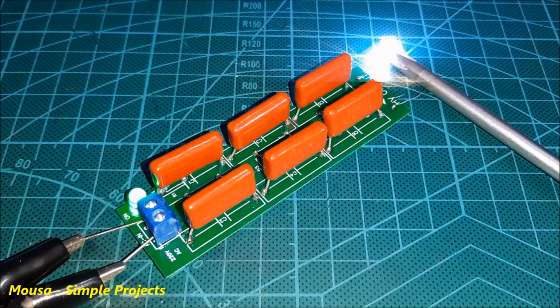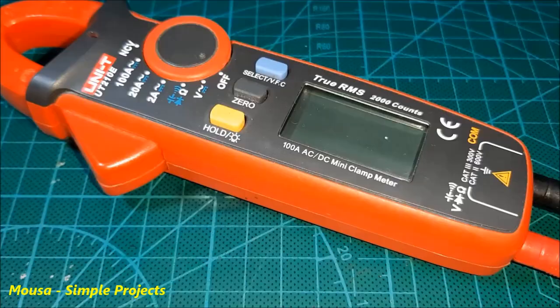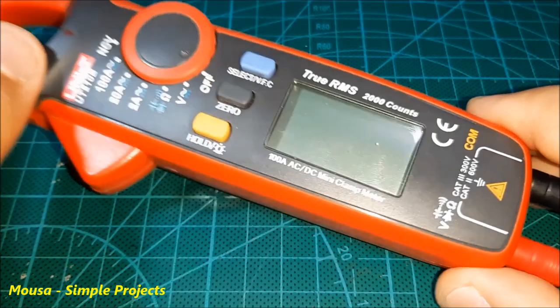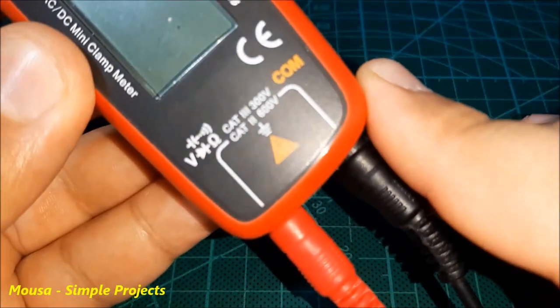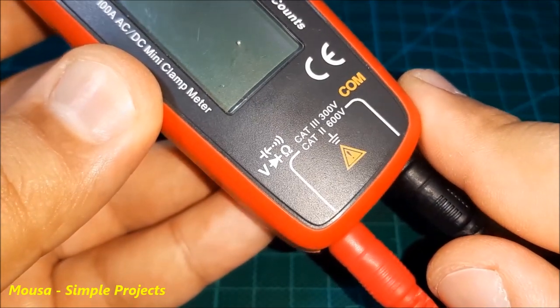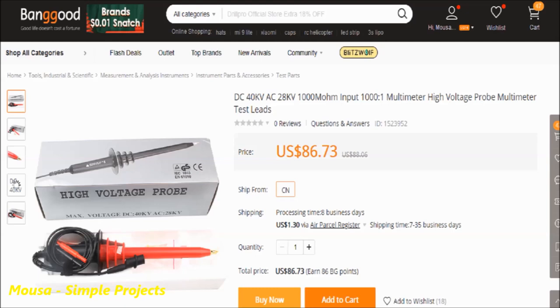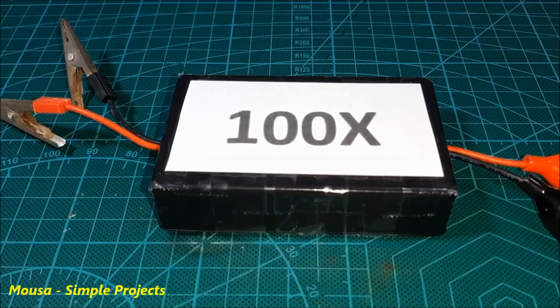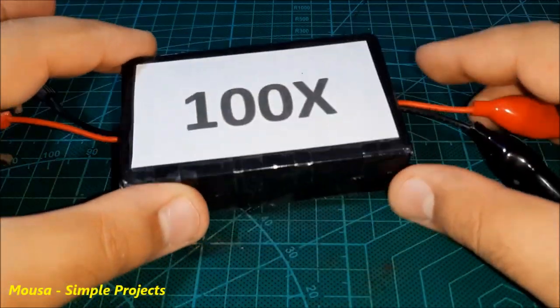I want to measure the output voltage from this circuit, but since my multimeter cannot handle more than 600 volts, I have to use a high voltage probe like this. I will show you how to make a high voltage probe in another video.